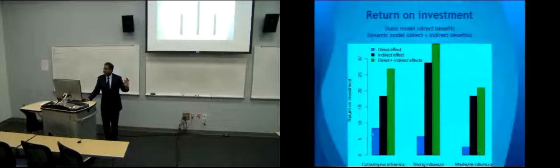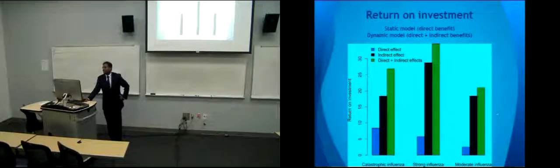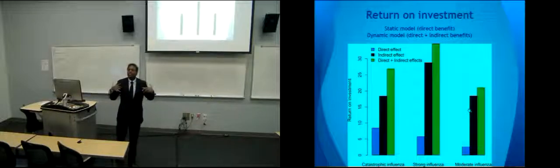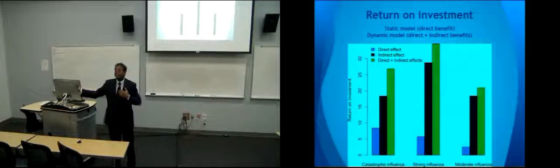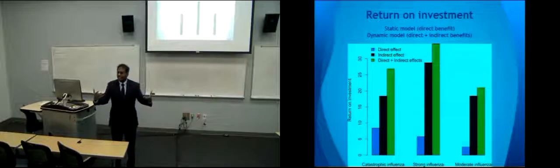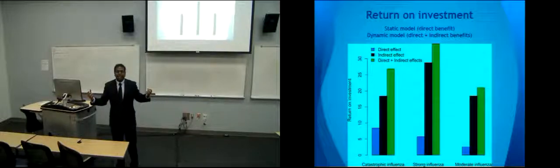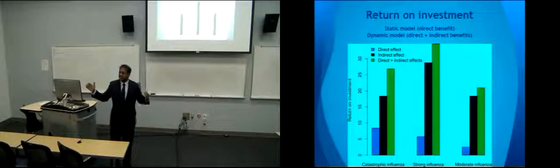The direct benefit, indirect benefit, and total benefit are shown across scenarios. As the pandemic scenario becomes more moderate, the impact of the indirect benefit becomes much more significant. In a stronger pandemic scenario, you're likely to get infected from multiple people — much denser transmission — so a vaccine intervention may only cut some chains of transmission. In a more sparse transmission network, a vaccine intervention is much more effective at cutting those chains.